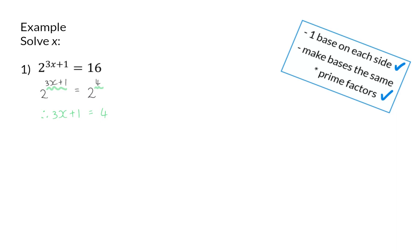Now I have a normal linear equation, and to solve x, my first step will be to get rid of the plus 1 on the left, and I'll do that by subtracting 1 on both sides, and then I will end up with 3 on the right. Next, I want to get rid of the times by 3, and I will do that by dividing both sides by 3, so x will be equal to 1.